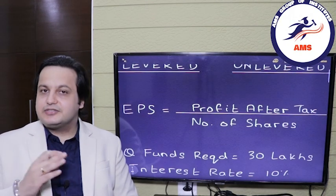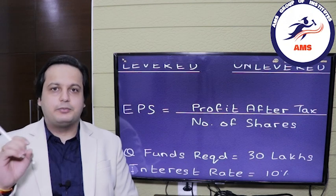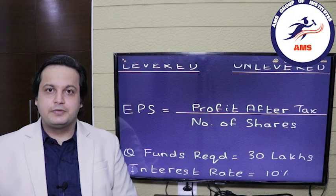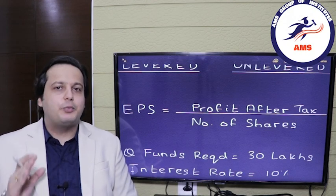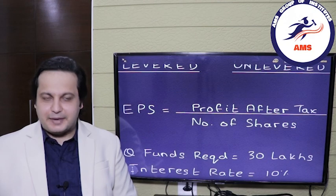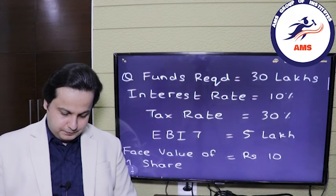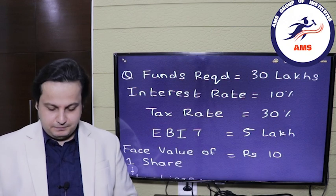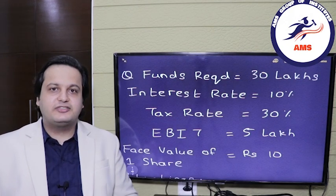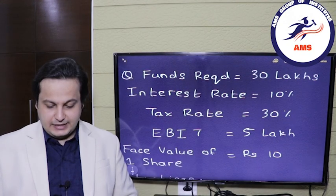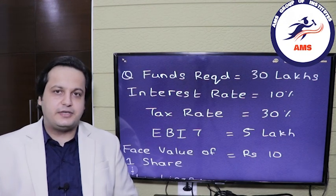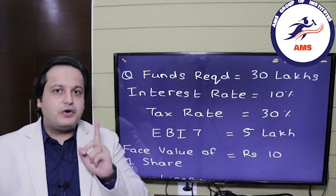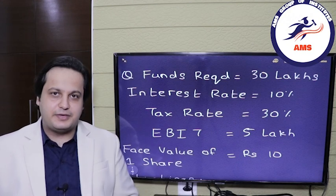EPS, as you can see on the screen behind me, is the profit after tax divided by the number of shares of the company. Let's move forward with an example, which is the best way to understand any concept. You have been given that the funds required are 30 lakh rupees, the interest rate is 10%, the tax rate is 30%, and the EBIT is 5 lakh rupees. One additional piece of information is that the face value of one share of the company is 10 rupees.